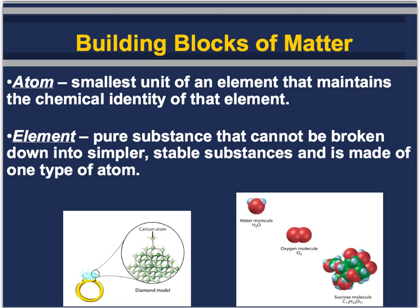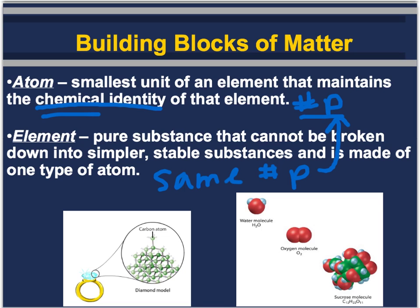This slide provides some more basic definitions needed to study chemistry. The building blocks of matter are described as atom, elements, and compounds. An atom is the smallest unit of an element that maintains the chemical identity of that element. Atoms are described based on their number of protons, and depending on the number of protons, this gives them different chemical identities or chemical properties. An element is a pure substance that cannot be broken down into simpler, stable substances — it is made of one type of atom. All the atoms of an element have the same number of protons, which determines the chemical identity of that element.